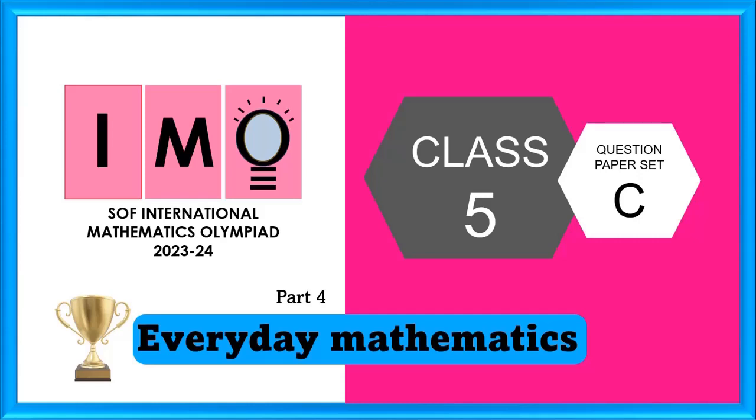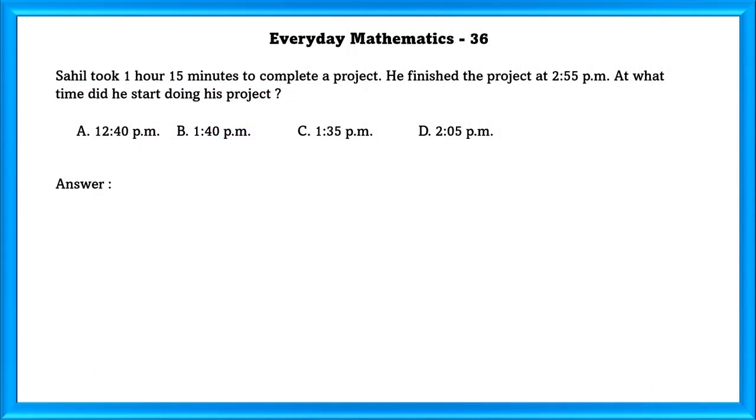IMO Class 5 ZC Everyday Mathematics. Question Number 36: Sahil took 1 hour 15 minutes to complete a project. He finished the project at 2:55 PM. At what time did he start doing his project?